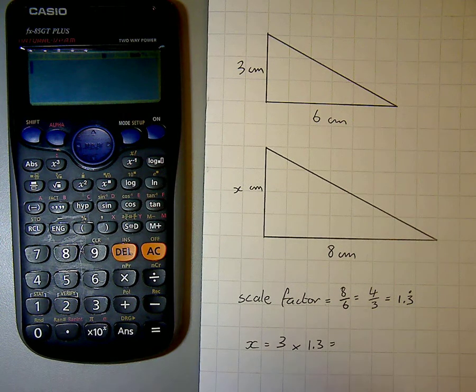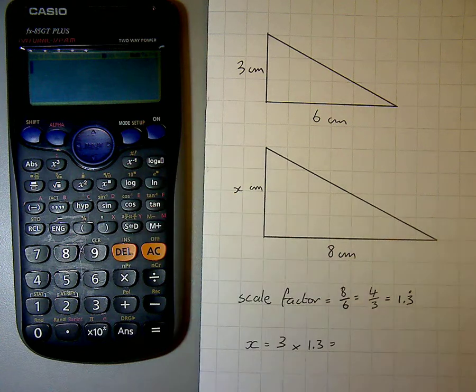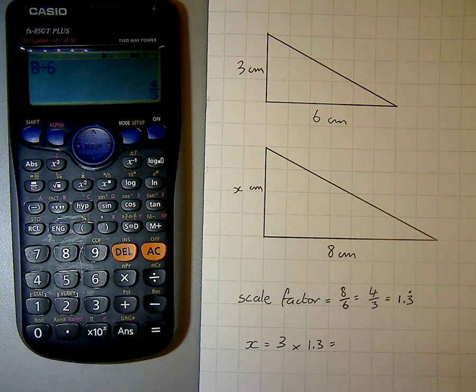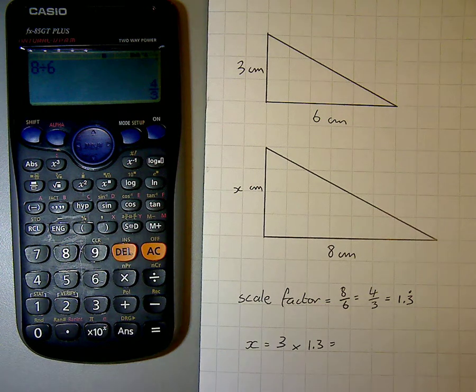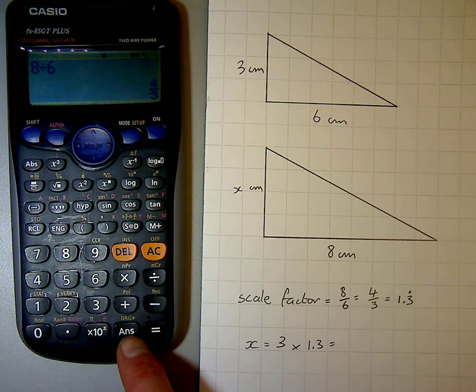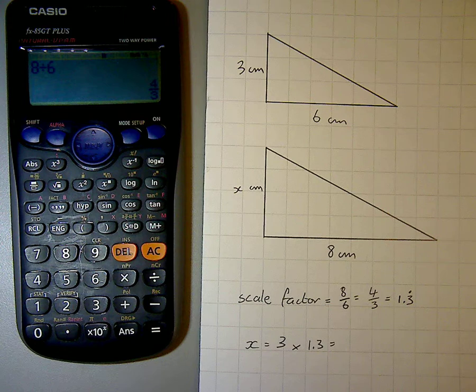So just to help us, what we can do is evaluate the scale factor again, which is 4 thirds. Okay, I've got a button on my calculator down the bottom which says ANS, which stands for answer. What I can do